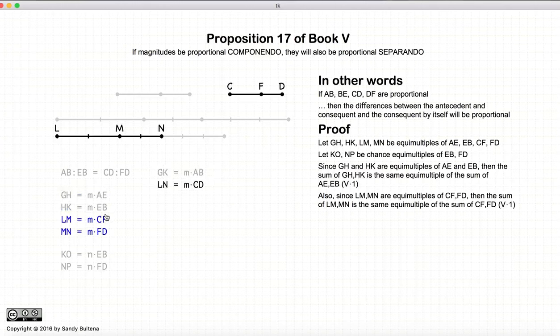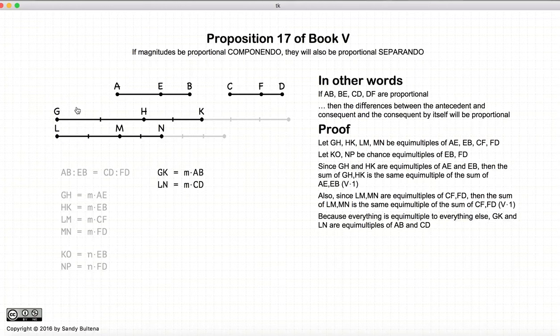Similarly, LM and MN are equal multiples of CF and FD, so if we add everything together, LM plus MN will be the same equal multiple of CF plus FD. In other words, we have LN is equal to m times CD. But now when we constructed GH and HK and LM and MN, it was all part of a set of the same multiple. So since everything is the same multiple, we end up that GK and LN are equal multiples of AB and CD.